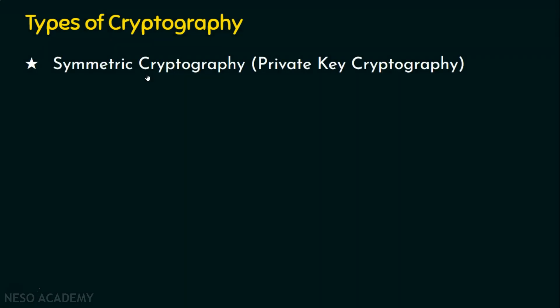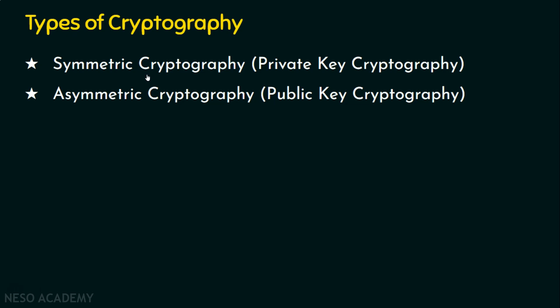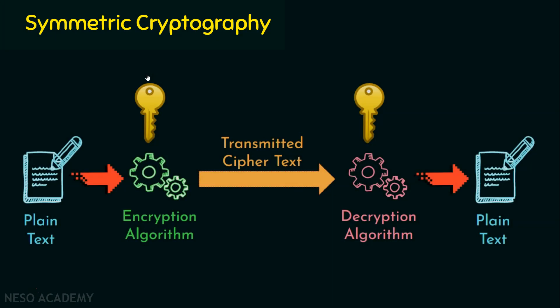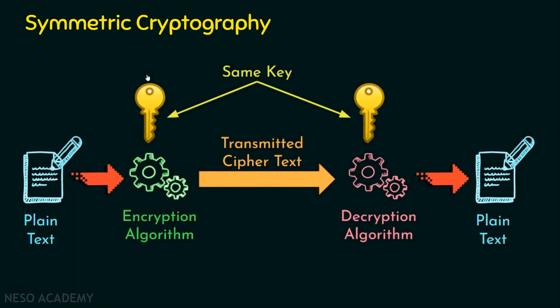Number one is symmetric cryptography, also called private key cryptography. In symmetric cryptography, the same key is used by both the sender and the receiver — in other words, the same key is used by both the encryption and decryption algorithms. Since the same key is used by both, this key is kept secret and is called a private key. Since only a private key is used by both parties, we call this method private key cryptography.